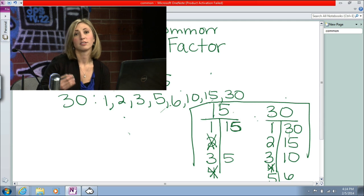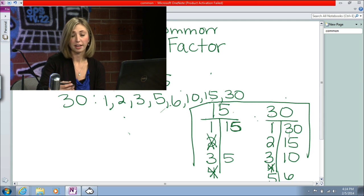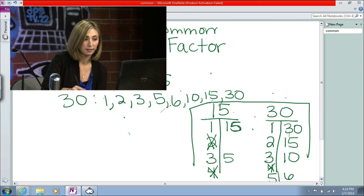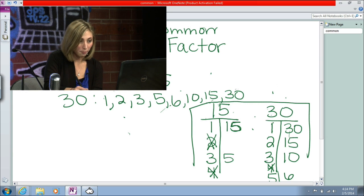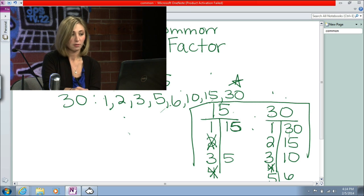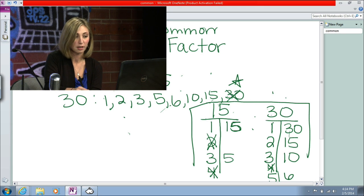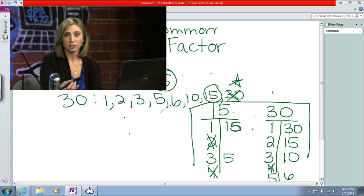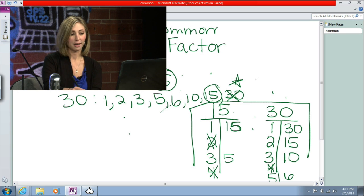So greatest common factor is just that. It's the largest number that is the same on both lists. So I always start with my longest list or my largest number. And I look, I start from the highest number and work my way down. So 30, no, it's not on my list for 15. So that's not my greatest common factor. And then I get to 15. Oh, great, 15, it's on both lists. So because it's the largest number that's on both lists, that is the greatest common factor of 15 and 30.